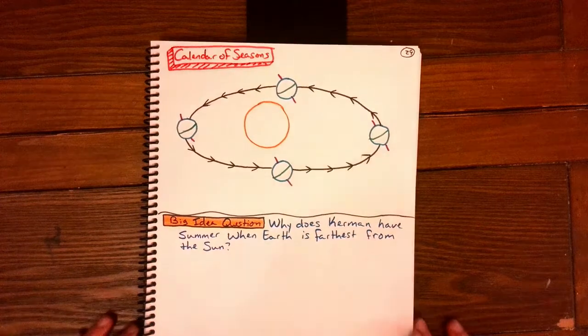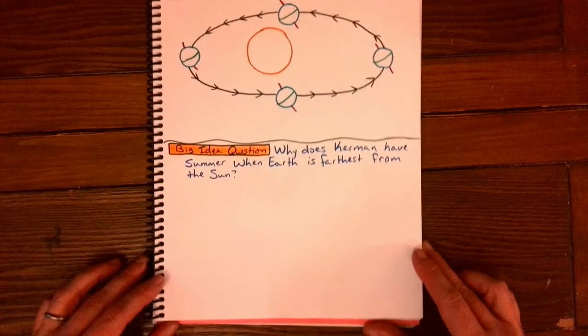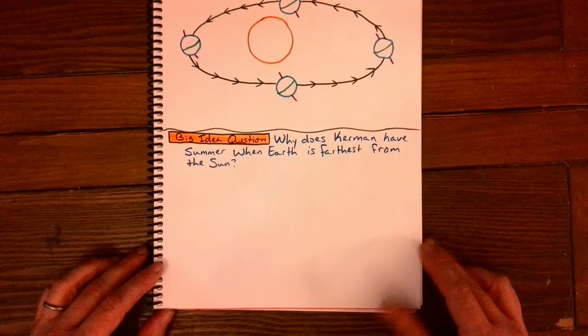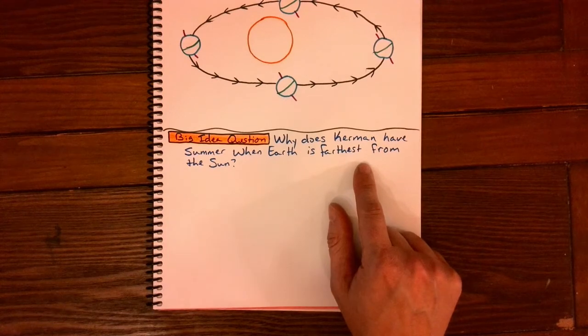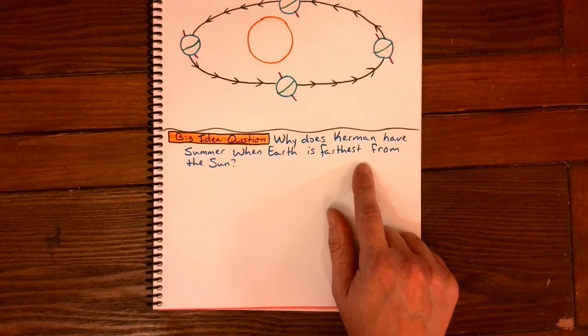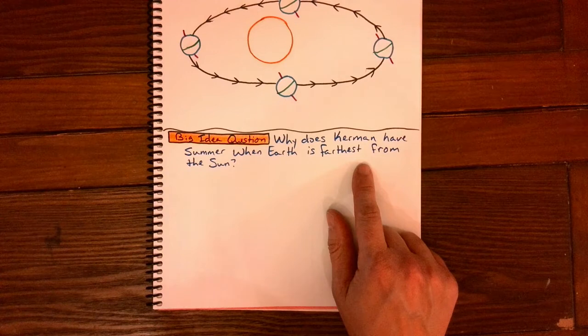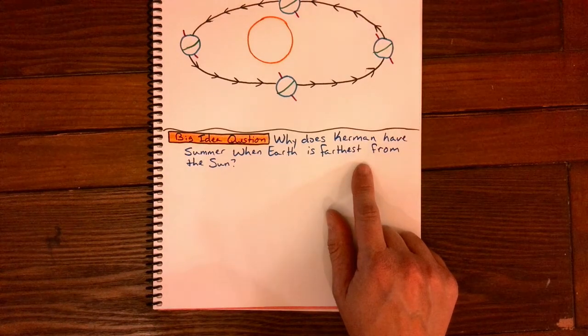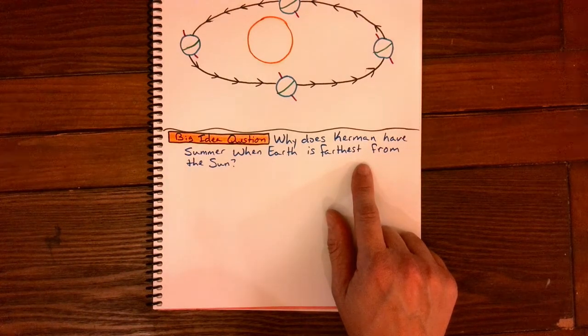Moving on to our big idea question for the week. Our question is this. Why does Kerman have summer when the Earth is farthest from the Sun? By the time you get to this part, you will understand that how close we are to the Sun does not determine seasons.